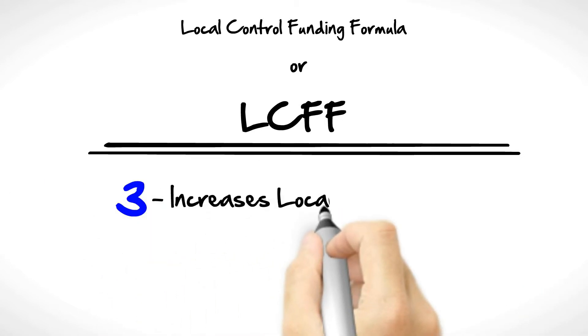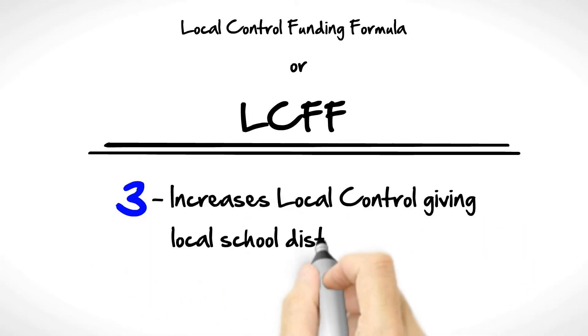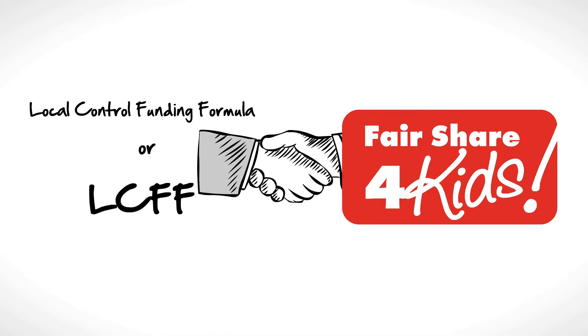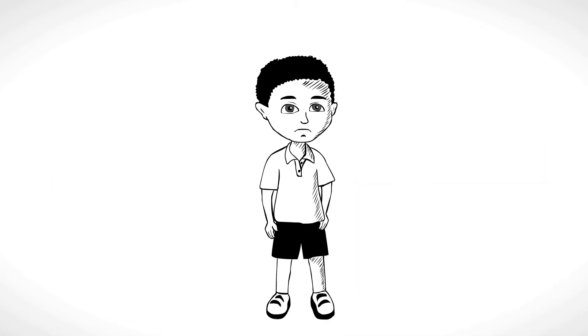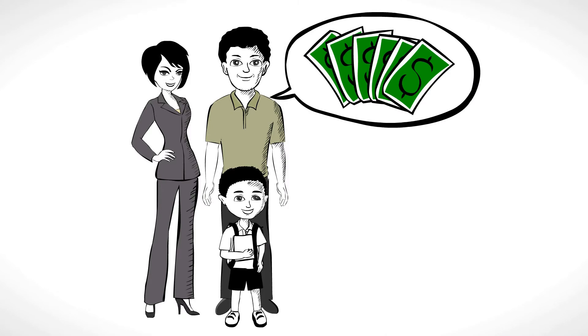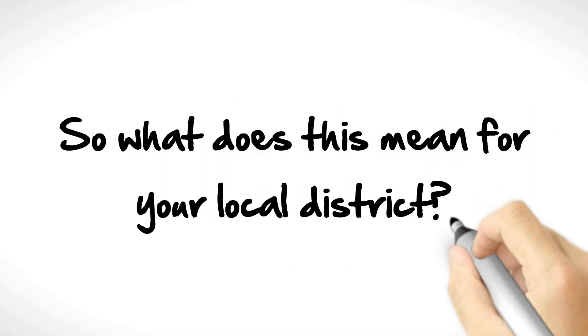3. Increases local control, giving local school districts more options on how to best use funds. Fair Share for Kids supports this plan so long as low-income students receive the support they need and parents have a voice on how monies are spent. So what does this mean for your local district?